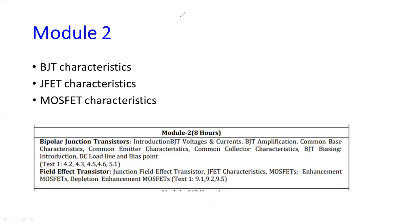In module 2, you can observe, it is basically the switches and signal level switches. So there are two types of switches you are going to be familiar with. One is BJT, other one is called FET. So in BJT, the most probable questions are explain common emitter characteristics, explain common base characteristics, explain common collector characteristics.